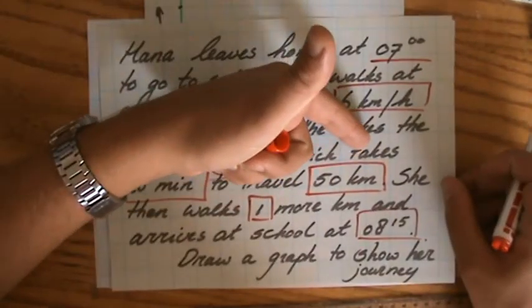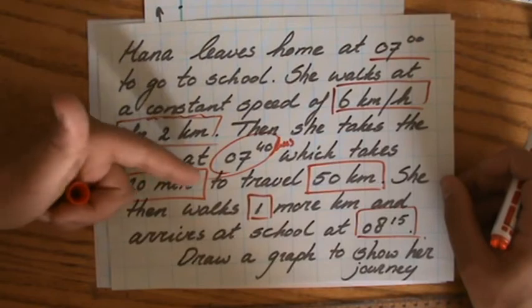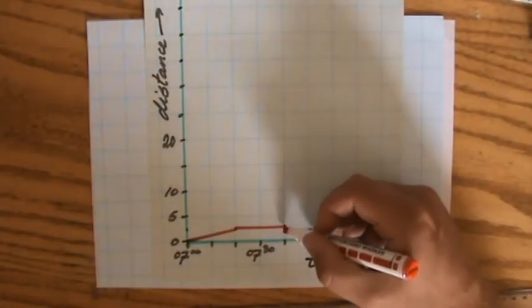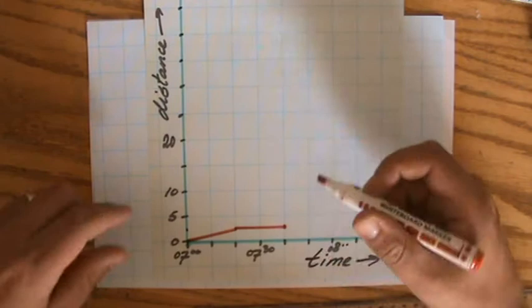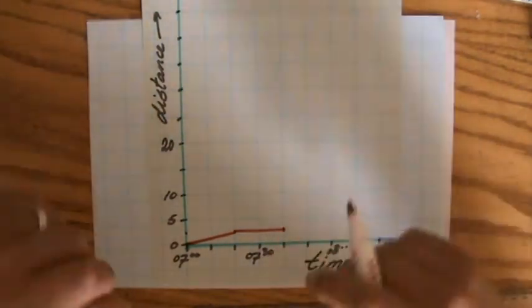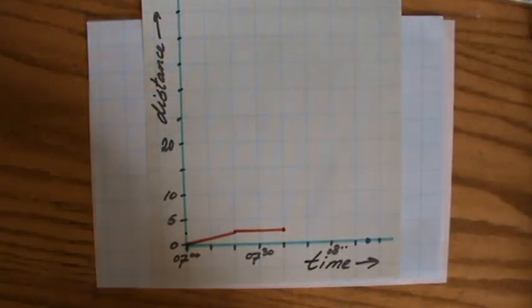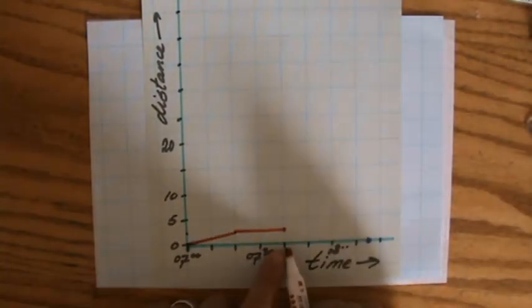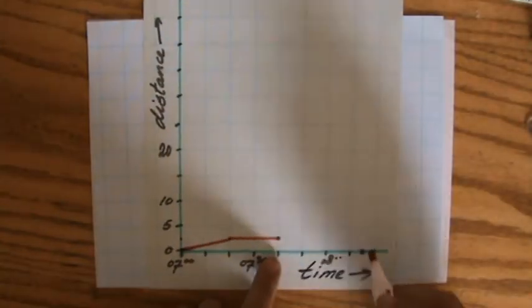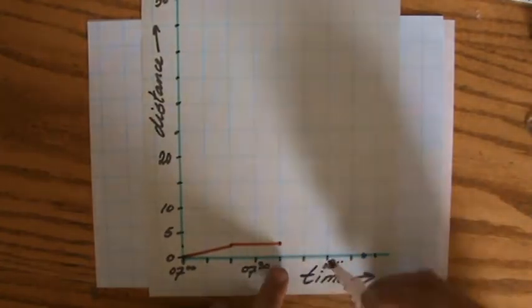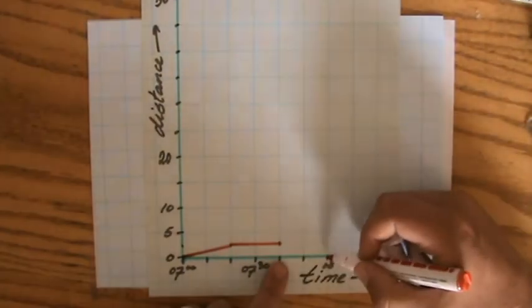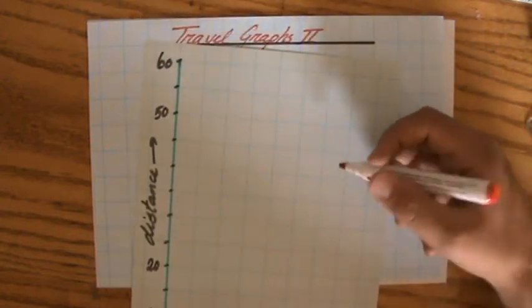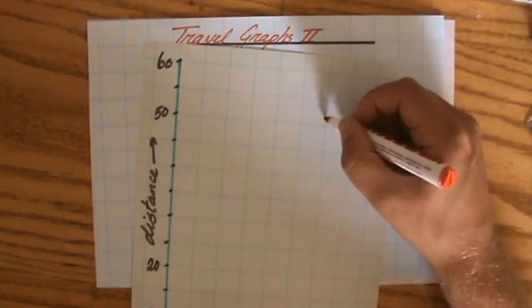The bus takes her 20 minutes to travel 50 kilometers. She has already traveled two kilometers, so adding 50 gives 52 kilometers total. She arrives at 8:00 — that's 7:40 plus 20 minutes — so the point is at 8:00 and 52 kilometers, which is why we need all that vertical space.